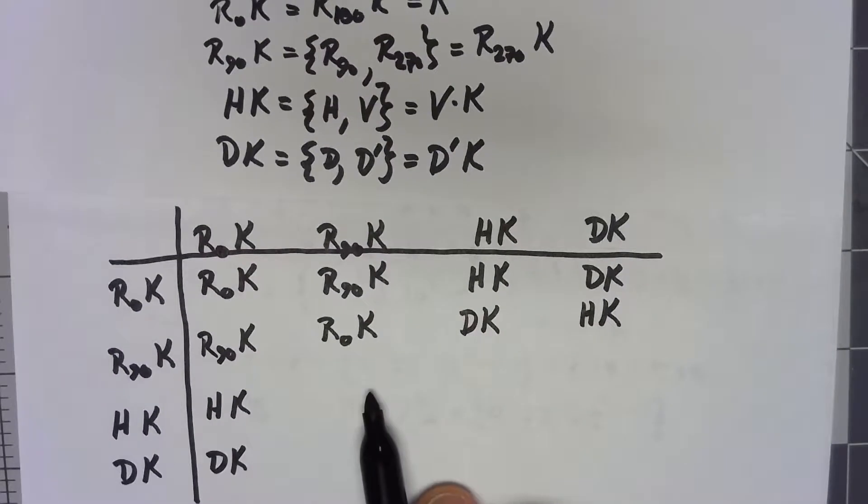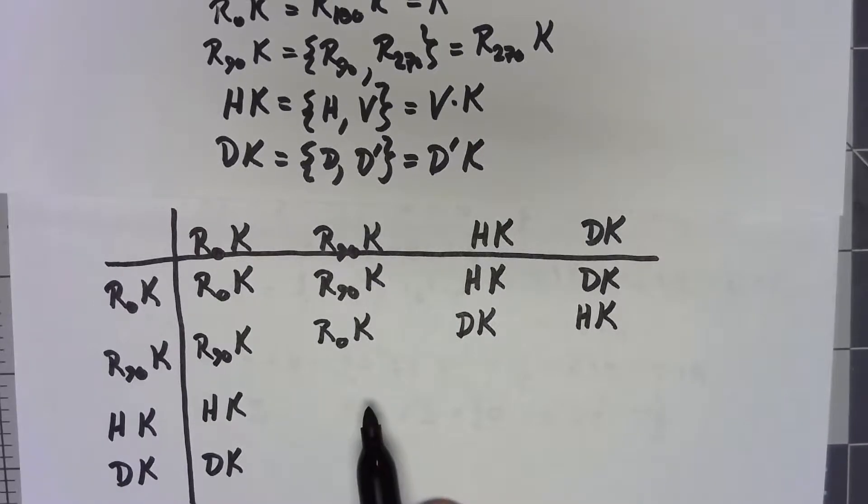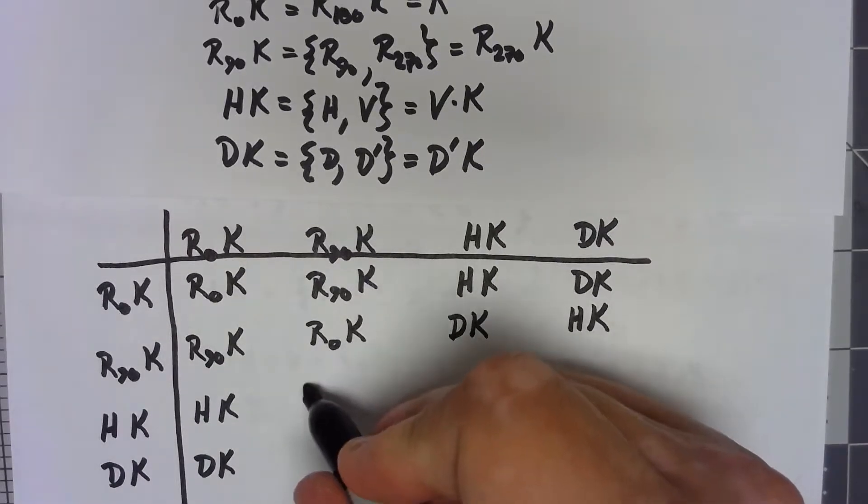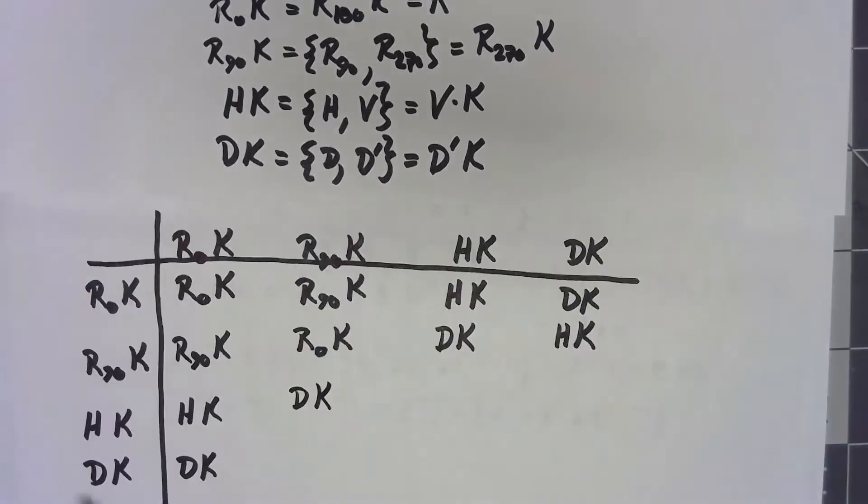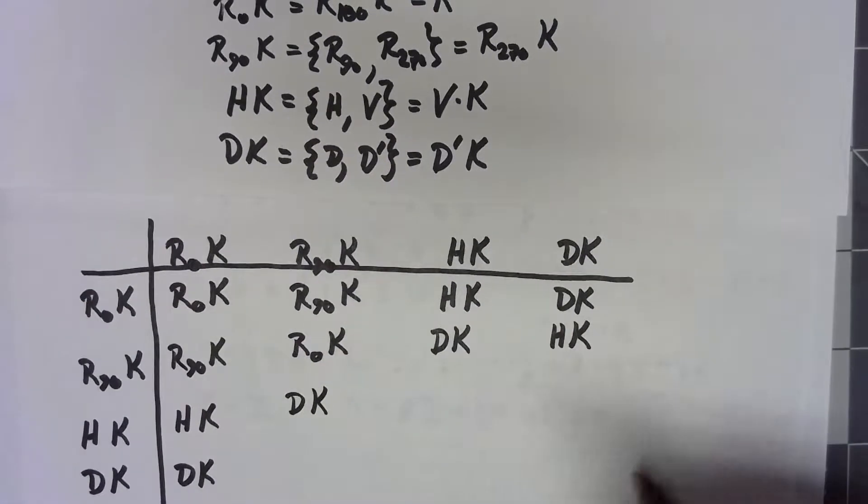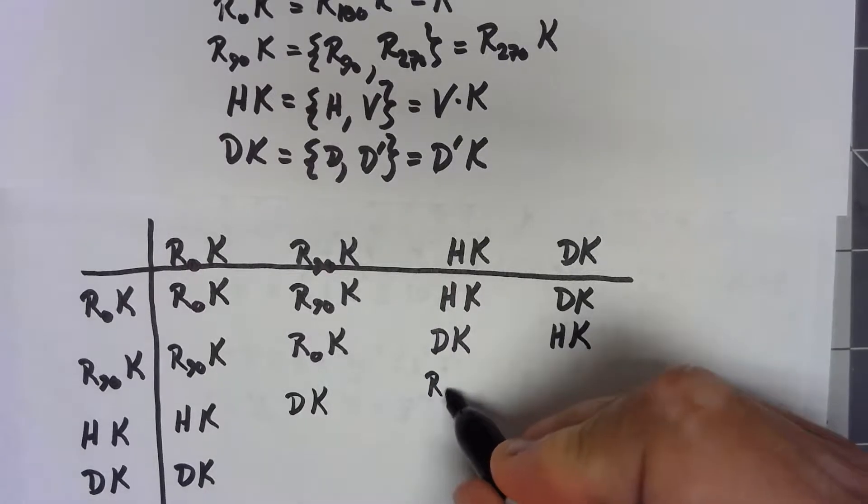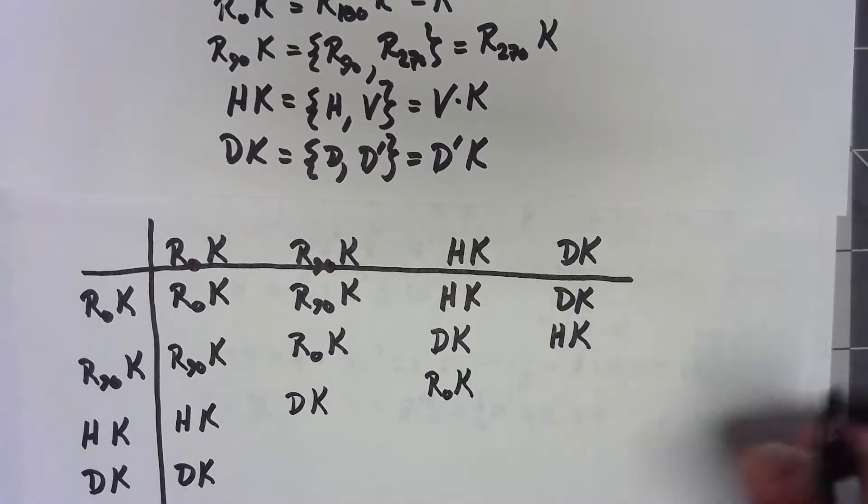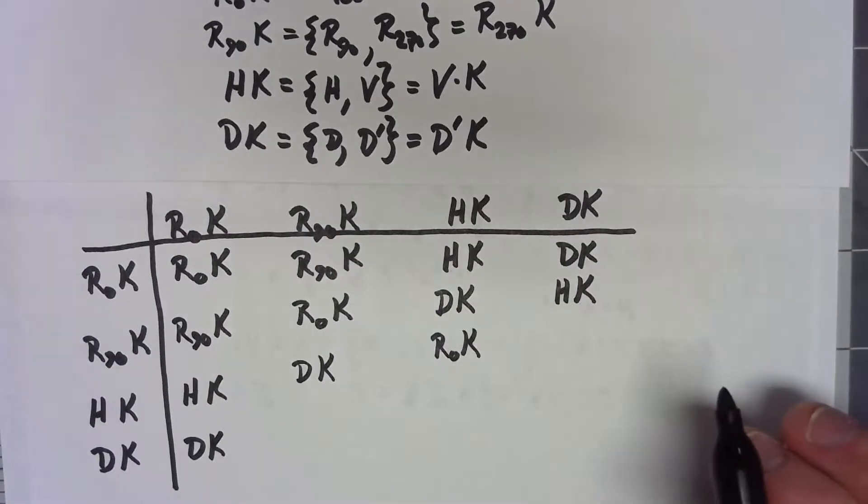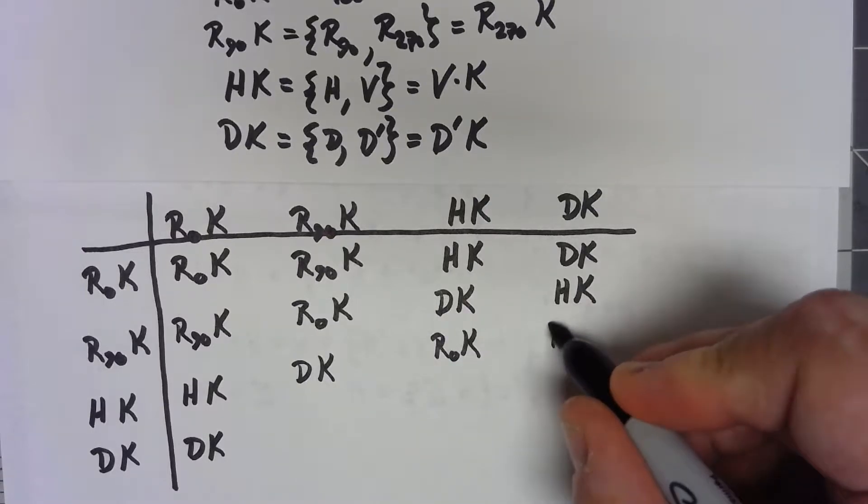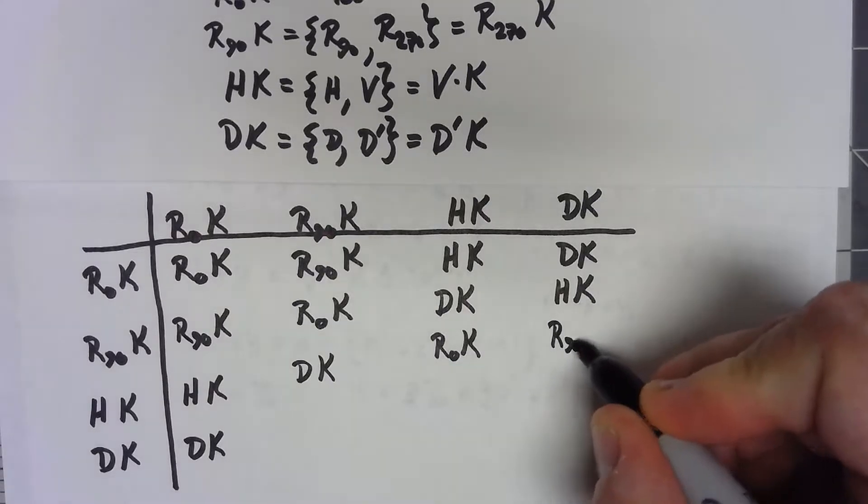HK times R90K, we're doing H times R90, which is D, so DK. H times H is the identity, so this is R0K, and H times D is R90K, so we have R90K.